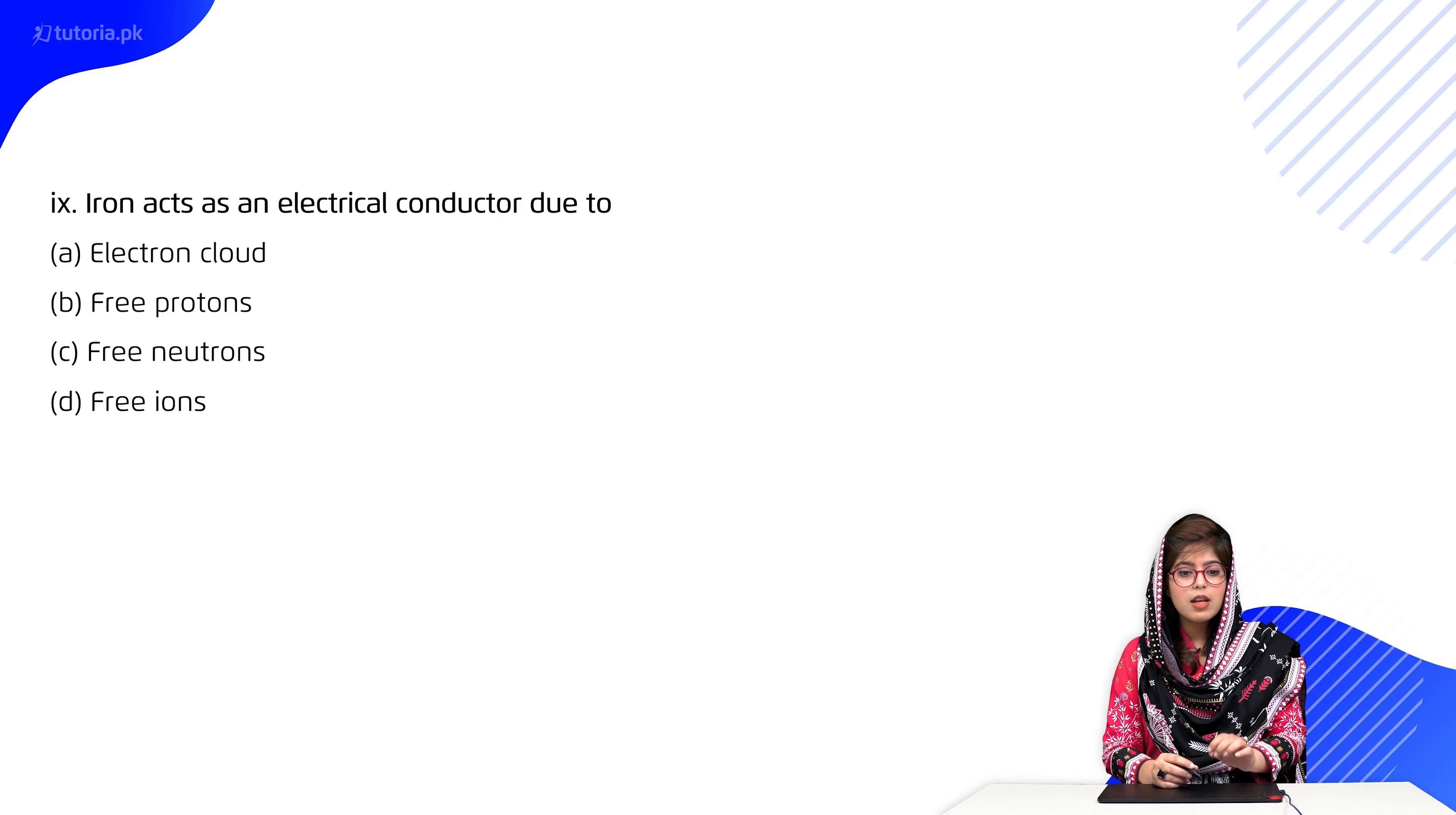Nine: Iron acts as an electrical conductor due to: A) electron cloud, B) free protons, C) free neutrons, D) free ions. So it's A, electron cloud ki wajah se.